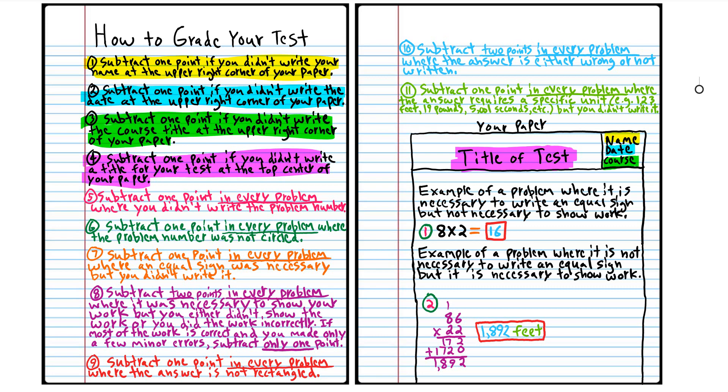The blue says subtract two points if your answer is wrong. The light green says subtract one point in every problem where the answer requires a unit like feet or seconds, and the unit was not written. So you need to be real precise when you're doing any kind of academic document. This is your record that you've learned this material. So you need to make sure that it's nice and neat and that everything is labeled properly.